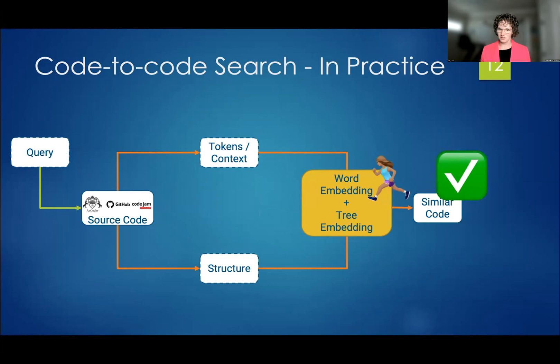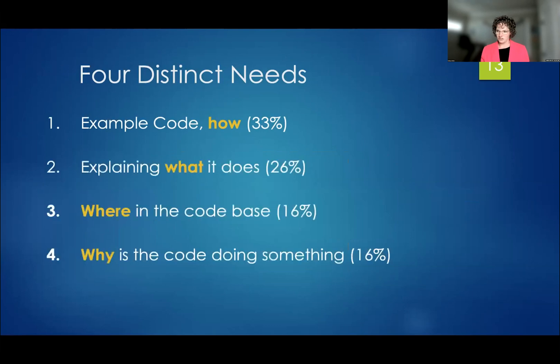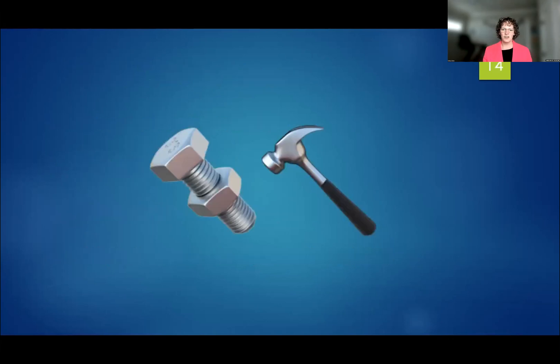So code-to-code search is coming. And it helps us answer one of these needs. It helps us answer questions about how. But there are other questions that developers are asking and they are using search to explain what questions, where questions, and why questions. And code search isn't great for all of these needs. Code search is a hammer and not every one of these questions is a nail.